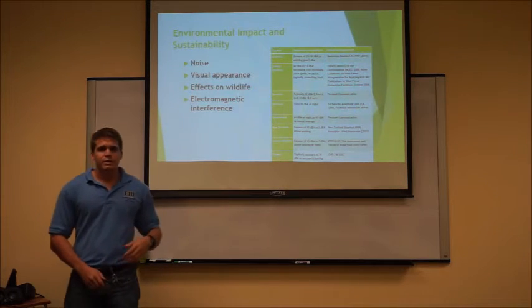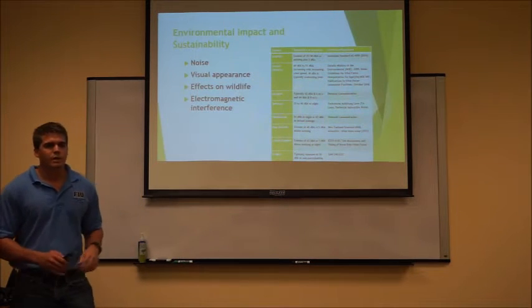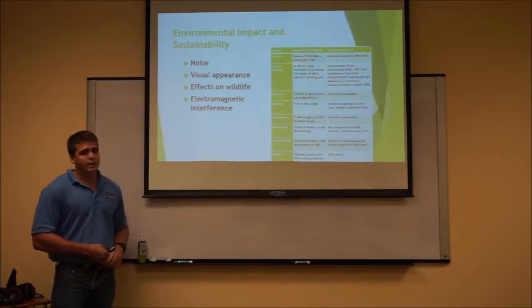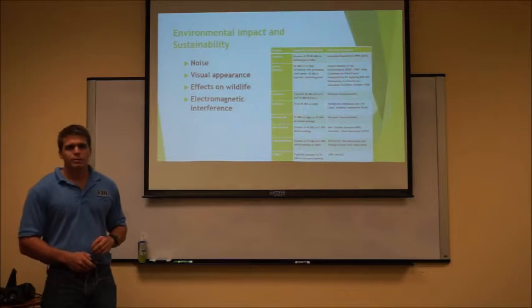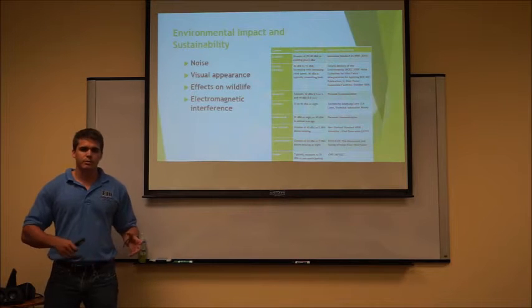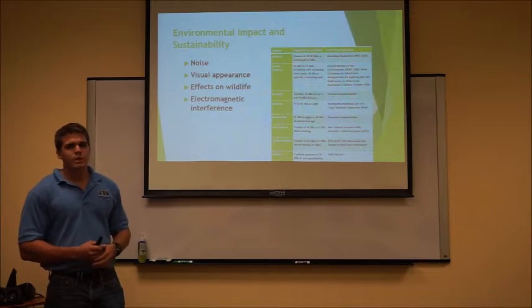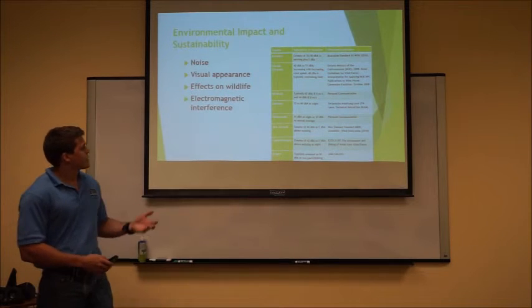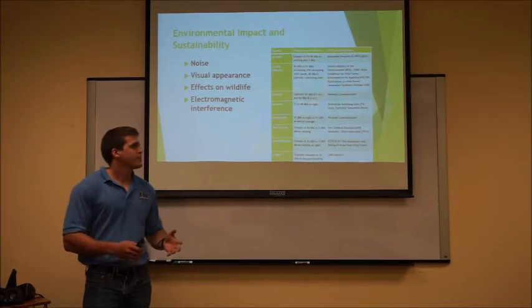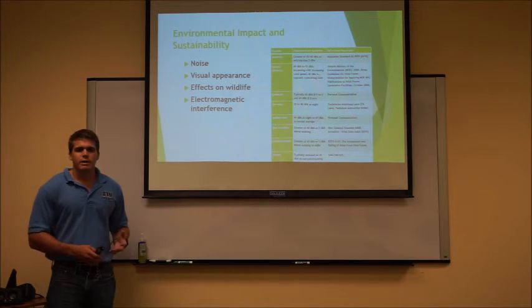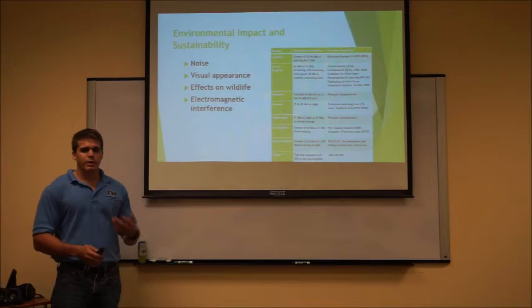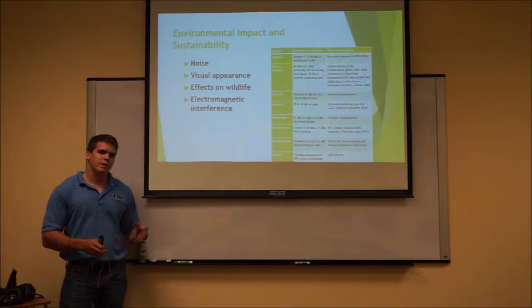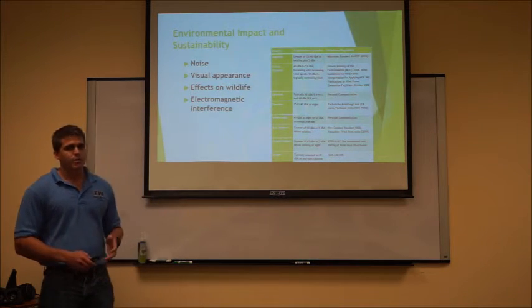For environmental impact and sustainability, there are several components to discuss today, just highlighting some of the main ones: noise, visual appearance, effects on wildlife, and electromagnetic interference. Perhaps the most dominant one is noise — there are several complaints when turbines are placed too close to a population, and there are regulations in certain countries, as you can see on this table, which usually float around 30 to 40 decibel limits. Visual appearance is pretty self-explanatory — some people just don't like the way they look. Effects on wildlife we want to minimize, as we may be placing a structure in the way of birds or destroying wildlife habitats. Electromagnetic interference depends on the materials used, but certain materials can in fact cause electromagnetic interference effects.